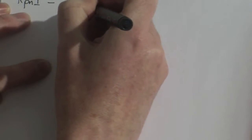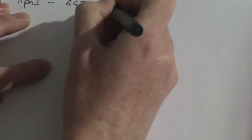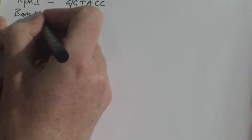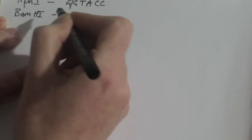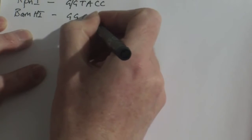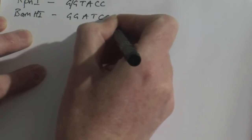For example, if I was to take the enzyme KPN1, the restriction enzyme, the only sequence of DNA that it will cut at is when it sees a sequence like this, and the enzyme will cut between the two G's. Another enzyme will have a completely different specificity. So for example, BAMH1 will cut at this DNA sequence here, double G A T C C, and again it cuts between the two G's.